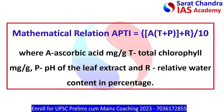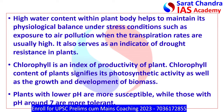The mathematical relation of Air Pollution Tolerance Index is as follows. The parameters include: A is ascorbic acid, T is total chlorophyll, P is pH of the leaf extract, and R is the relative water content in percentage.